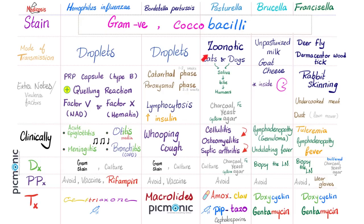Pasteurella: one of the zoonoses — cats and dogs, because Pasteurella lives in their saliva. Bites or rarely licks can transmit it. Diseases: cellulitis, osteomyelitis, septic arthritis. Diagnosis by culture on charcoal yeast agar enriched with iron and cysteine. Prophylaxis: avoidance. Treatment: amoxicillin-clavulanate orally or piperacillin-tazobactam intravenously. Brucella: unpasteurized milk and especially goat cheese.